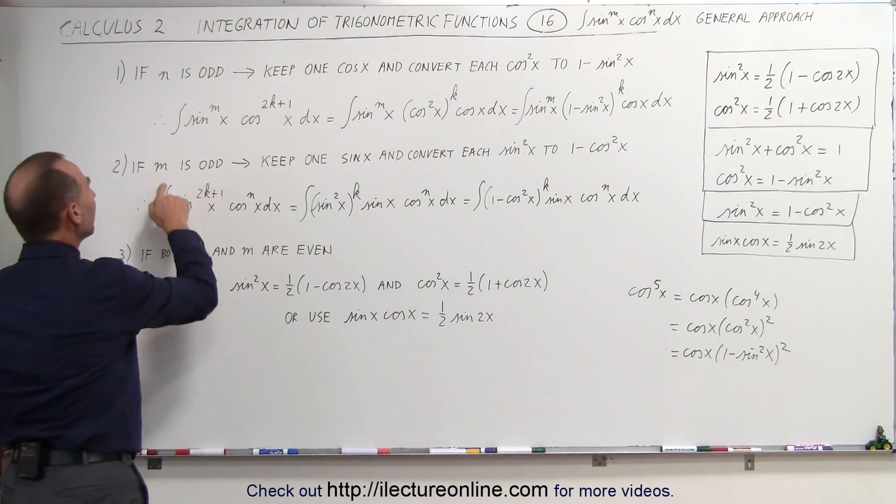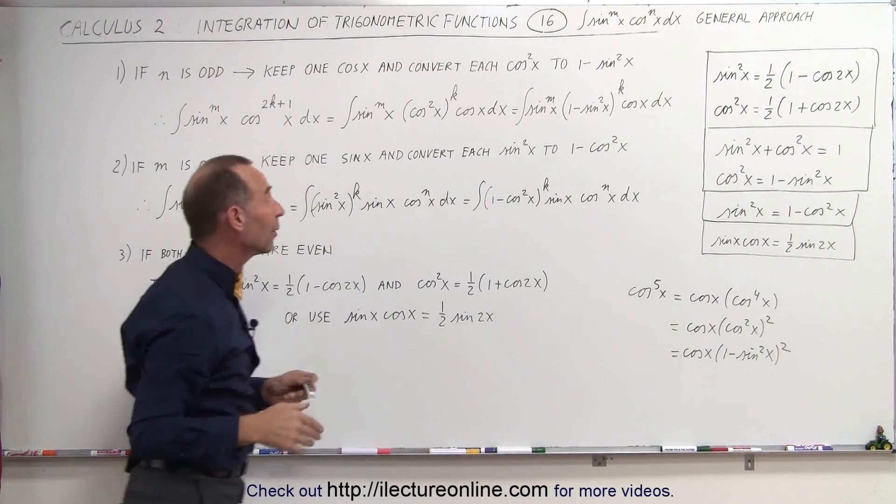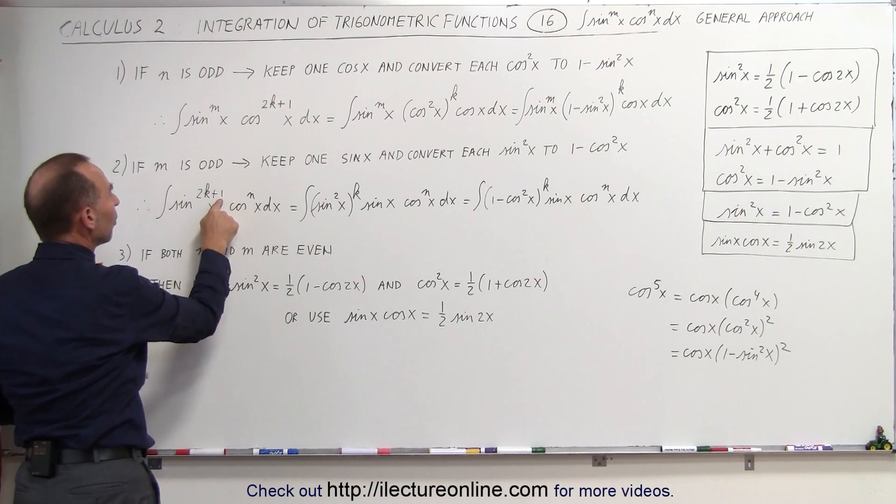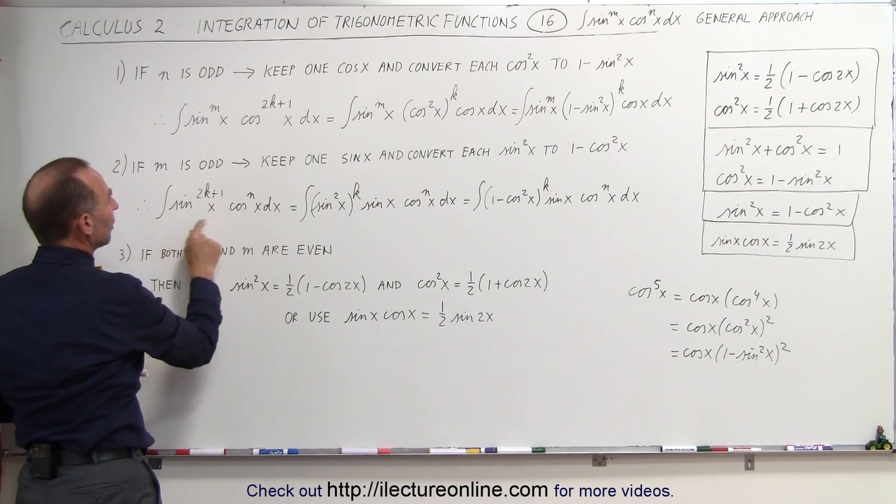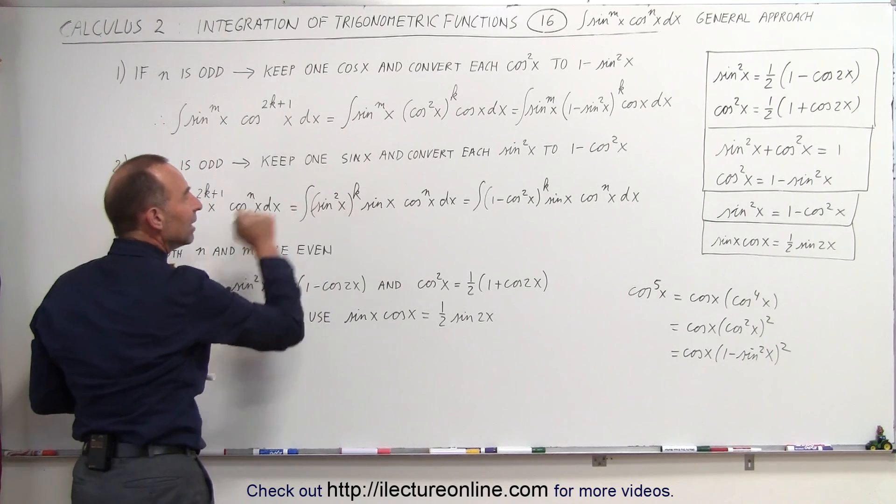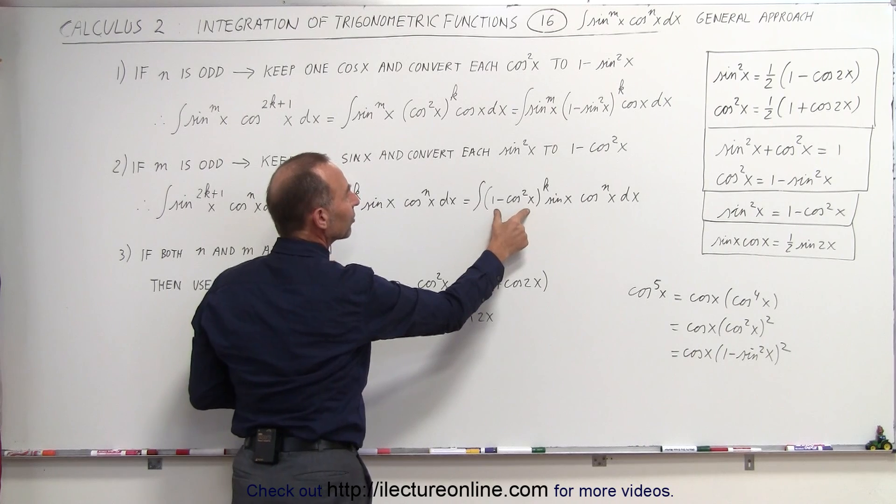If, on the other hand, m is odd, if the exponent on the sine of x is odd, then you do it the other way around. Then you write the sine of m as sin(2k+1), because it's an odd number. You then pull out a sine of x, and you only have the sine raised to an even power. For every sin²x, you write 1 minus the cosine squared of x.